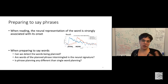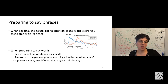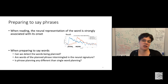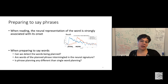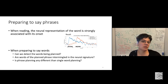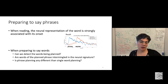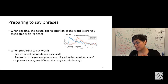Several questions follow from this: if words are being planned and don't exist in the environment, how do they show up in the neural signature? Are they intermingled? Does one follow the other? What's the ordering of the planning? Can we detect the words being planned, and how are they existing in the brain at those points in time? We'll also explore whether planning a phrase differs from planning a single word.